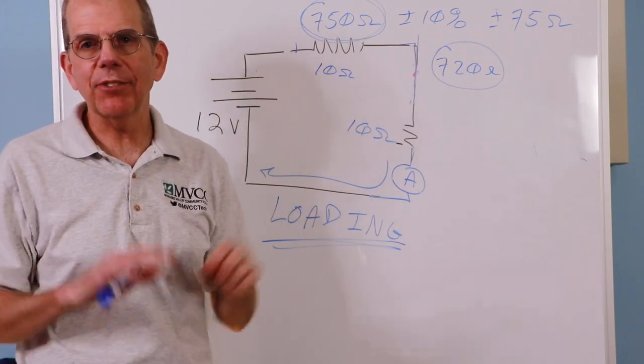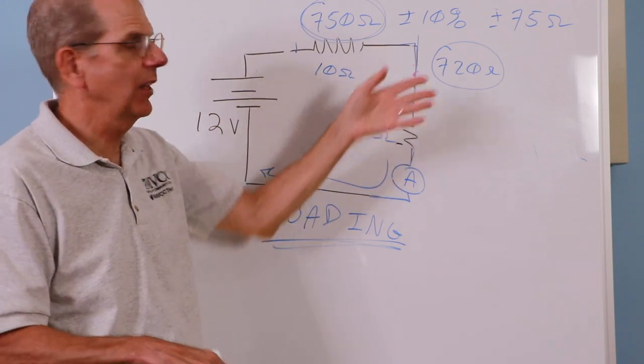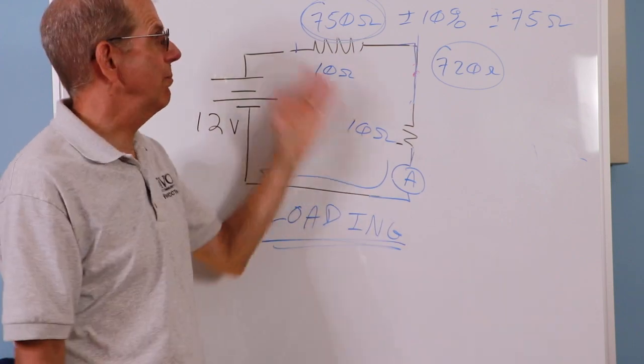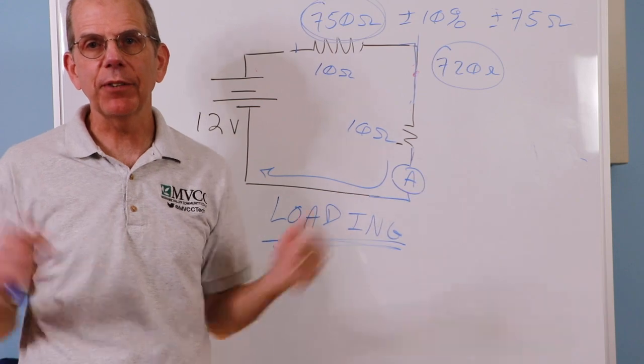But normally, that's not going to be the case. In a typical lab, you're going to be using maybe five and 10% tolerance resistors, your meter is going to be more accurate than that. So you're going to use the meter to measure the values rather than use the nominal value. That just makes perfect sense.